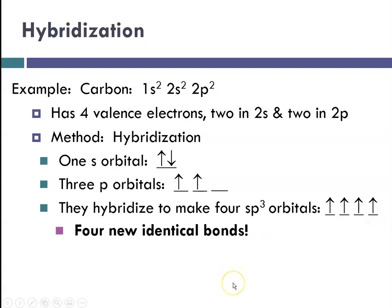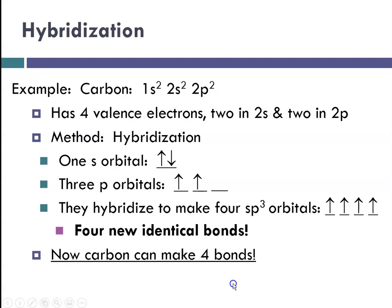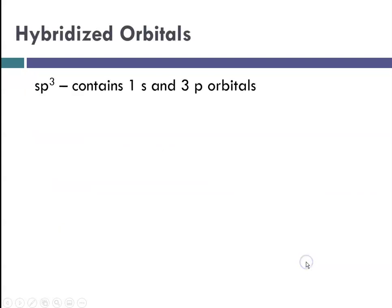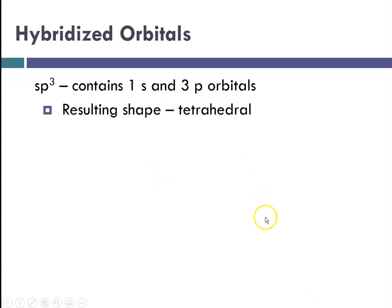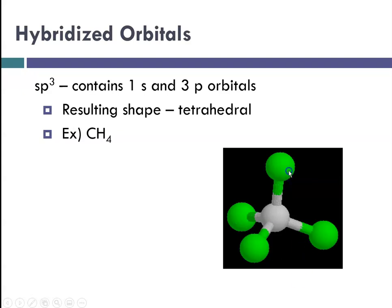So there are four new identical bonds that can be formed, and carbon goes ahead and makes those four bonds that we've been talking about previously in this chapter. SP3 contains 1s and 3p orbitals, and the resulting shape, since there are four orbitals, would be tetrahedral. An example would be methane, and the tetrahedral shape would look like that.